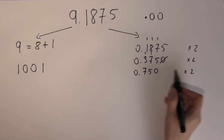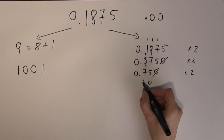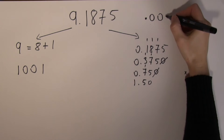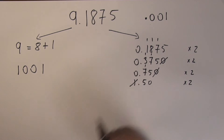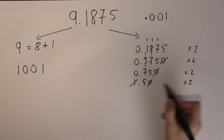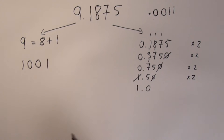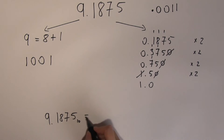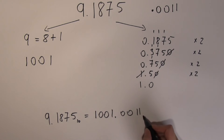Double again: 2 times 5 is 10, carry the 1. 2 times 7 is 14 plus 1 makes 15 — now I have an overflow. I record this as the next digit after the radix point and then double again. That 1 is not here anymore because I picked it up and recorded it. So 2 times 5 is 10 — the next digit is 1 again. Pulling together: 9.1875 in decimal is the same as 1001.0011 in binary.